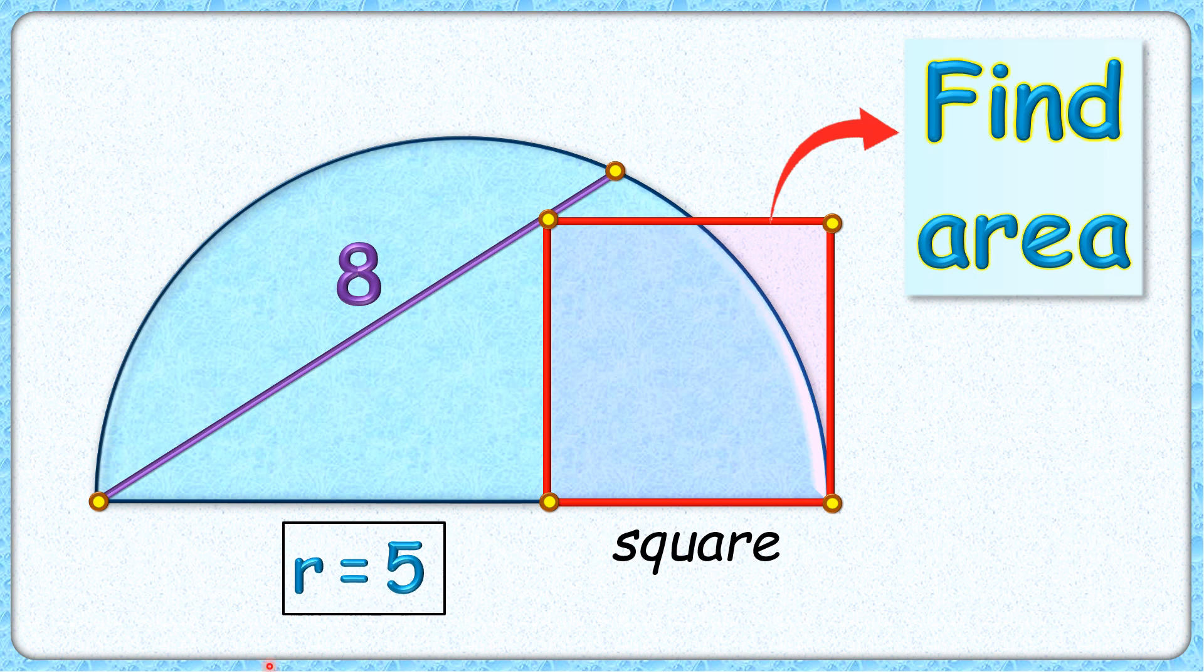Wow, it's an interesting question. Given to us is a semi-circle with radius 5 cm. Length of this purple cord is 8 cm, and using this limited data we have to find the area of this red square whose one vertex is at the end of the diameter, another vertex is on this purple cord. Let's check the solution.